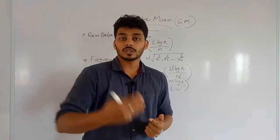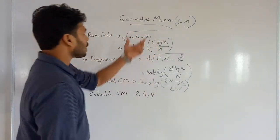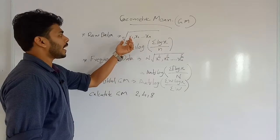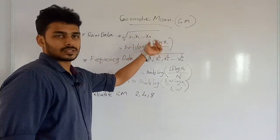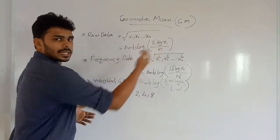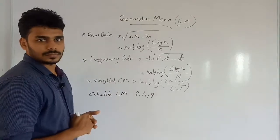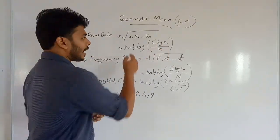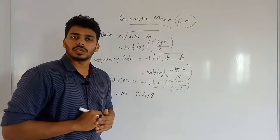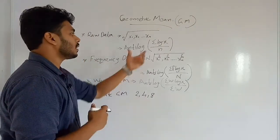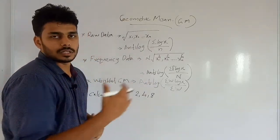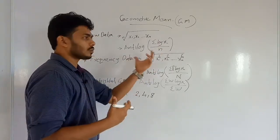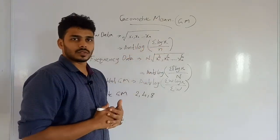Now we will discuss the equations. Geometric mean, denoted GM, for raw data: the equation is the nth root of x1, x2, ..., xn. Using logarithms, the formula is: antilog of (sigma log x divided by n). This is for raw data. We use a calculator with logarithm tables.